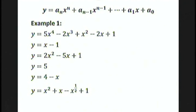Let's get right to some examples. y equals 5x to the fourth minus 2x cubed plus x squared minus 2x plus 1. This is a polynomial of degree 4 — a fourth degree polynomial because the highest power is 4.